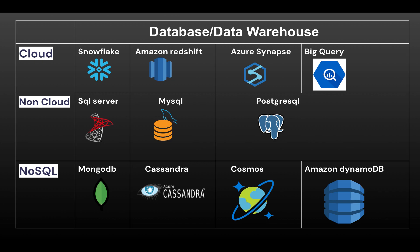For cloud data warehouses, Snowflake, Amazon Redshift, Azure Synapse, and BigQuery are the top four in high demand. Knowing any two of them is very good — there's no need to learn all four in detail. For non-cloud databases, you have SQL Server, MySQL, and PostgreSQL. It's expected that from your college days you would have understood SQL Server or MySQL and basic SQL queries, so knowledge of any one of these non-cloud databases is good to have.